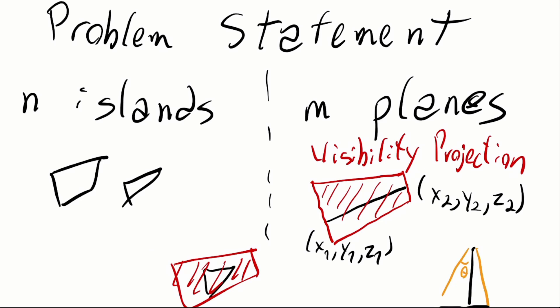and the end position x, y, z2 of these planes. Now the problem is that we want to alter the angle in which the camera can view this plane, and we want to see what is the smallest angle so that each of the islands is completely visible by at least one of the planes.